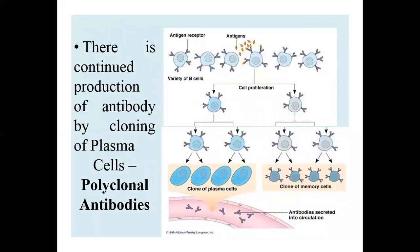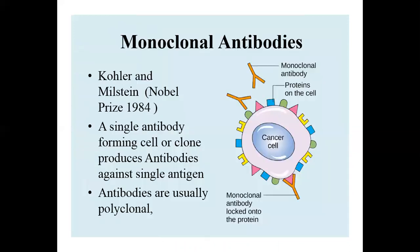There is continued production of antibodies by the cloning of plasma cells, known as polyclonal antibodies. A variety of B cells undergo cell proliferation to produce clones of plasma cells and memory cells. These cells are used for the production of polyclonal antibodies secreted into the humoral system of multicellular organisms.